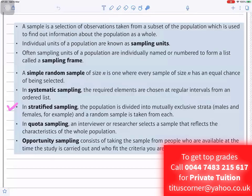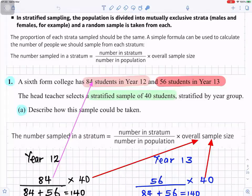So these are some of the ideas we're going to use for this question. In stratified sampling, the population is divided into mutually exclusive strata - males and females, for example. Like we had here, Year 12 and Year 13. And a random sample is taken from each. That's the one we're going to concentrate on for stratified sampling. The proportion of each strata sampled should be the same. A simple formula can be used to calculate the number of people we should sample from each stratum.